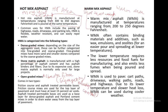Hot mix asphalt is manufactured at 300 to 350 degrees Fahrenheit, while warm mix asphalt is manufactured at 200 to 250 degrees Fahrenheit. Hot mix is used in hot areas while warm mix is used in warm areas. Warm mix asphalt has properties that make it easier to pour and spread at lower temperatures, and it requires less fuel and resources during production.